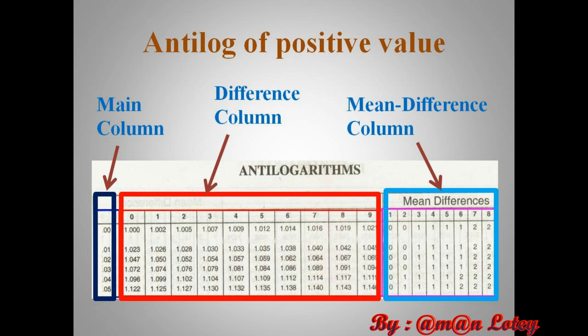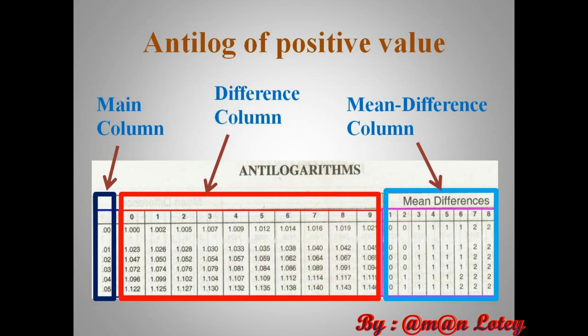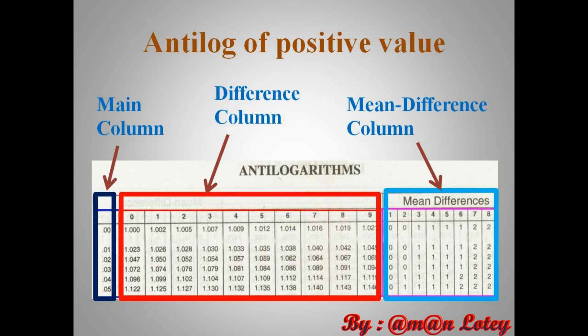Like the log table, the antilog table is also divided into three columns. These are the mean column, the difference column, and the mean difference column, as shown in the figure.